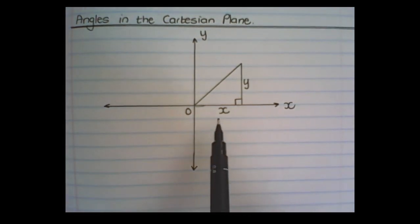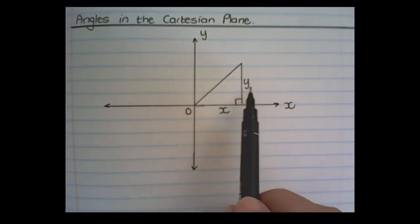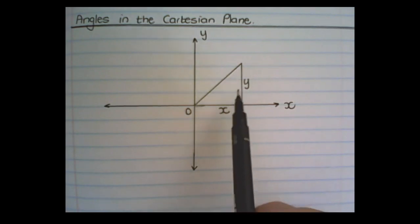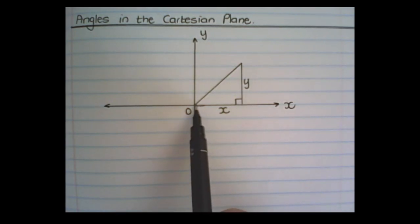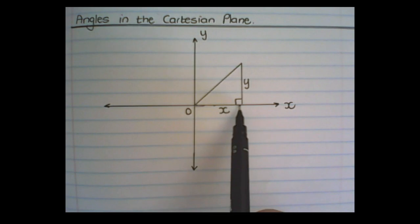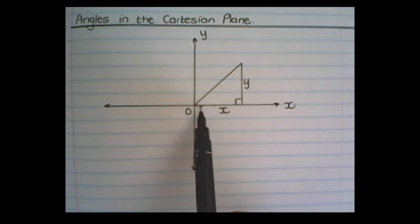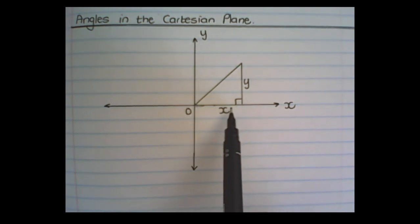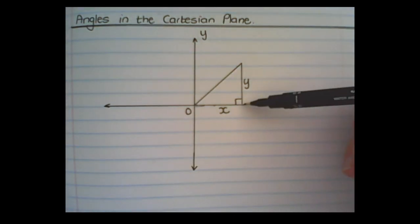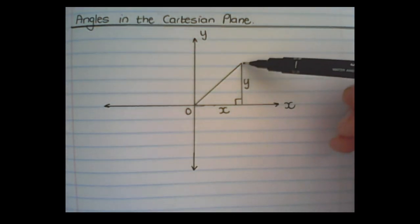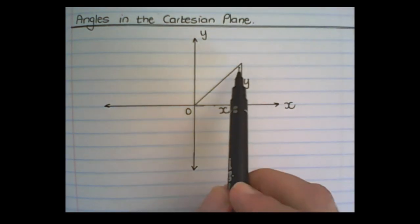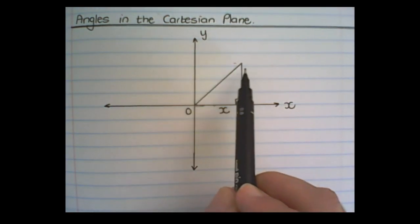If I draw a triangle on the Cartesian plane, the following information can be found in the triangle. If I want to find the length of this line, the horizontal line, I will read a value on the x-axis. And if I want to find the length of the vertical line, I will read the value from the y-axis.